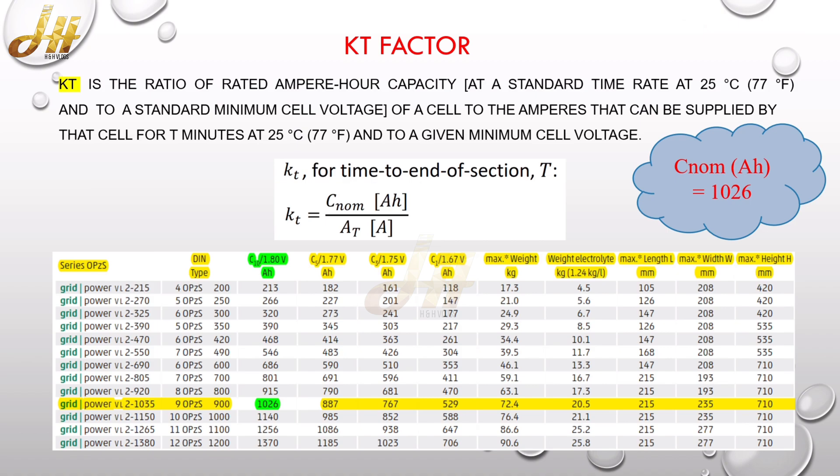As per the sizing calculation, we required 1003 Ah capacity of the battery. And since we cannot find any 1000 Ah battery, we are going with the next higher capacity, which is 1035. So the model number we prefer is VL2-1035. The normal capacity of the battery, which they mentioned at C10 in end cell voltage 1.80, is 1026 Ah capacity. So we can consider the normal capacity of the battery is 1026 Ah.